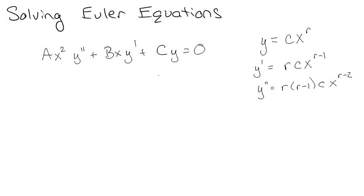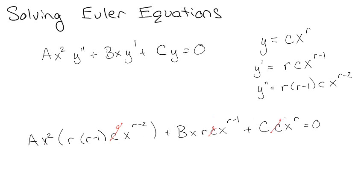What's fantastic about this is whenever you plug these in, you get ax squared times r(r-1)cx to the r minus 2, plus bx times rcx to the r minus 1, and then plus c times cx to the r equals 0. Those c's look really stupid, but each term has one, so I can just get rid of them.